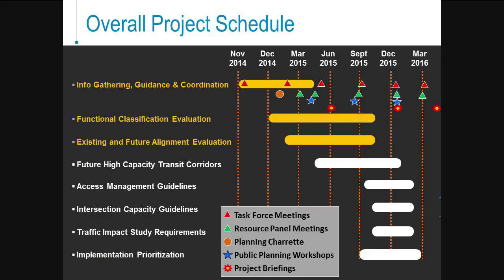By way of overall project schedule, the project was initiated in late 2014 with anticipated completion in spring of 2016. Tasks currently underway are highlighted, with key milestones including coordination with the task force, input from the resource panel, briefings with city council, and continuous coordination with city staff. Public input through planning workshops is also highlighted — initial input was slated for mid-April, follow-up input for late summer, and another round of input on draft recommendations is slated for late 2015 to early 2016. Subsequent tasks are anticipated to be initiated later in the process but overlap internally within the conduct of the study.